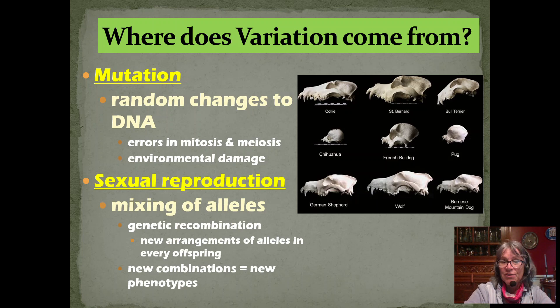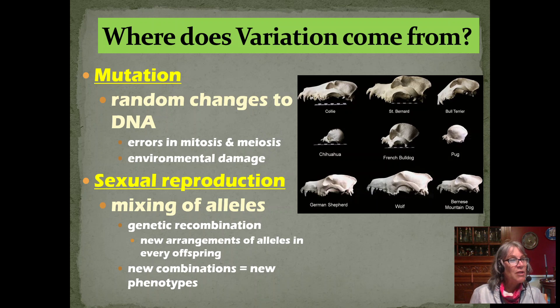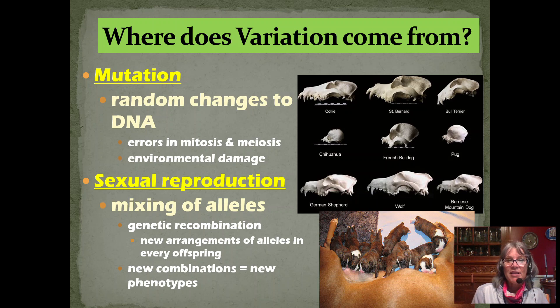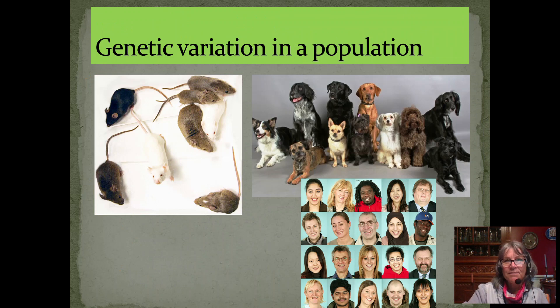You can also get genetic variation through sexual reproduction. When we learned about meiosis, we get changes to our DNA through crossing over — not through a mutation, but through changes in which combinations of chromosomes get passed down in the gametes. So meiosis contributes to a lot of variation as a precursor to sexual reproduction. And then in sexual reproduction, we have a mixing of alleles from two different parents — mom and dad — so we always get new combinations and new arrangements of alleles in every individual offspring, giving us new and different phenotypes.